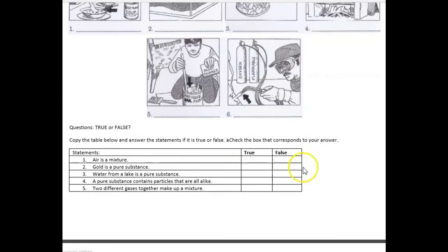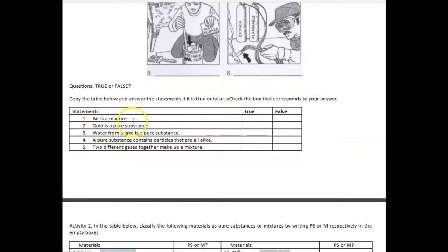Next, we have the questions. True or false? Copy the table below and answer the statements if it is true or false. Check the box that corresponds to your answer. This is easy. There are 5 statements here, numbered 1 through 5. You will just choose whether it is correct, true, or wrong, false. You will just check it in true or false. That's easy. You can do it.